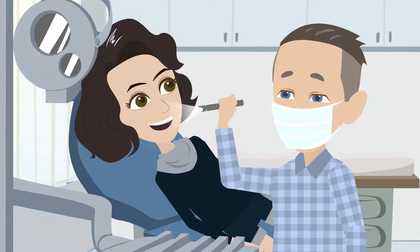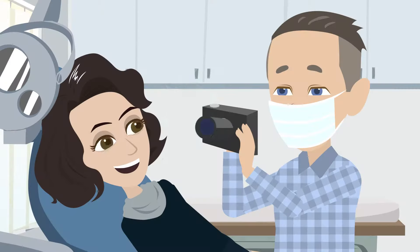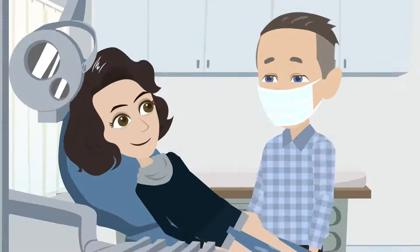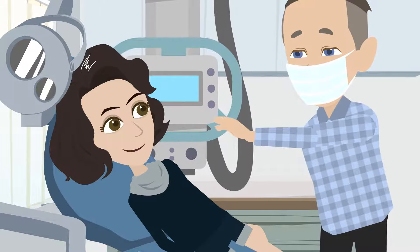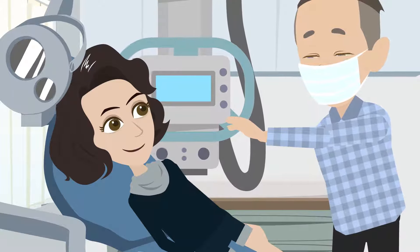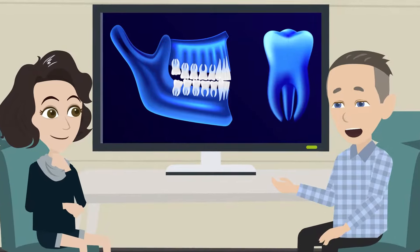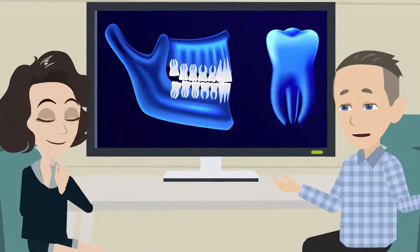We start with a thorough exam and diagnosis. This means taking photos of your teeth, smile, and face to assess aesthetics. We then take a 3D cone beam to assess the bone, TMJ, and teeth. Finally, we create a digital model of your teeth and tissue from our digital scanner.